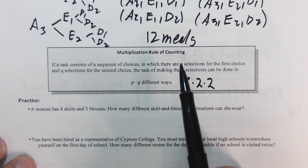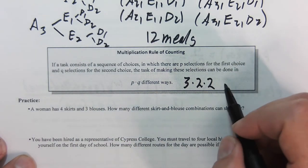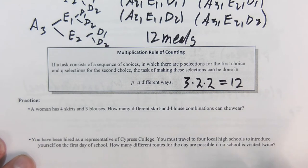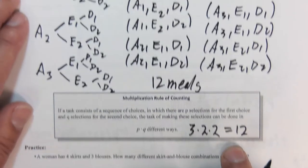Three appetizers, three entrees, and three desserts, which gives us a total, again, of 12 meals, which is obviously a lot less work than writing it all out like we did up here.